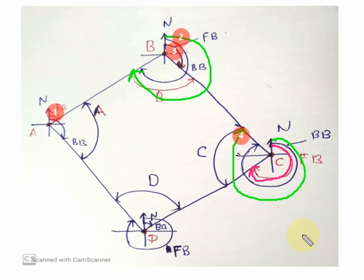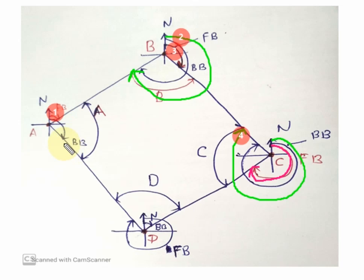The back bearing of CD is measured from station D towards the CD line. Similarly, the fore bearing of DA is measured from D towards the DA line, and the back bearing of DA — not AD — is measured from station A towards the DA line. So I think you now better understand what fore bearing and back bearing are.